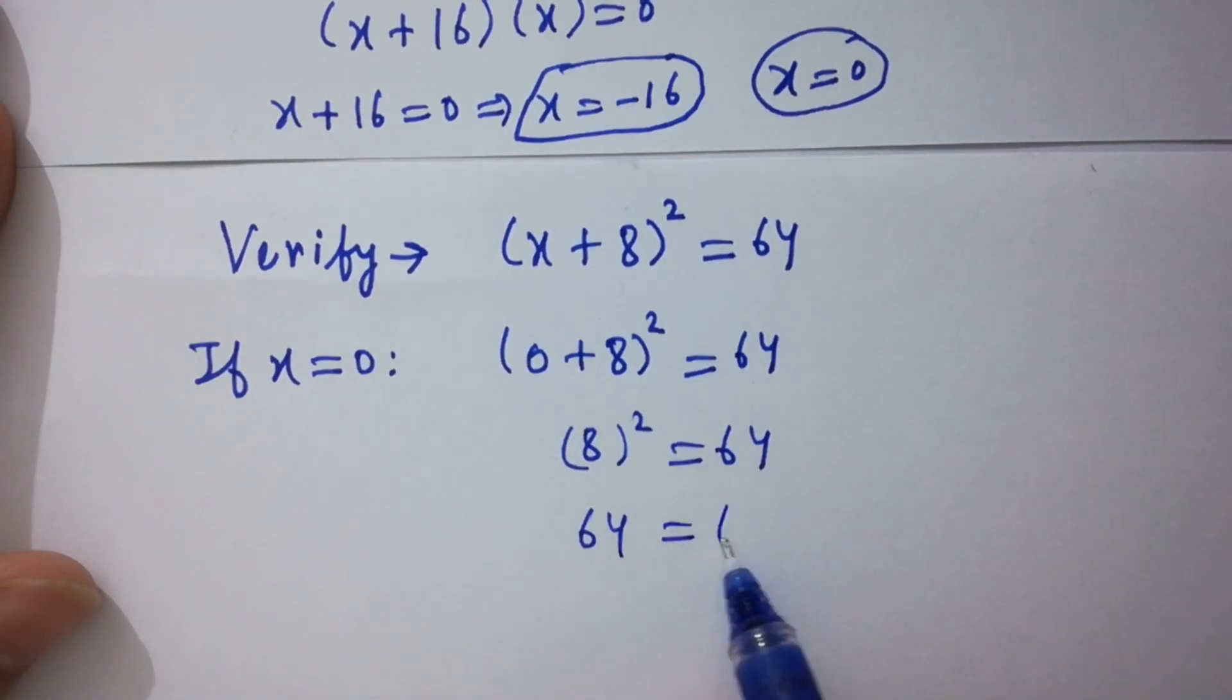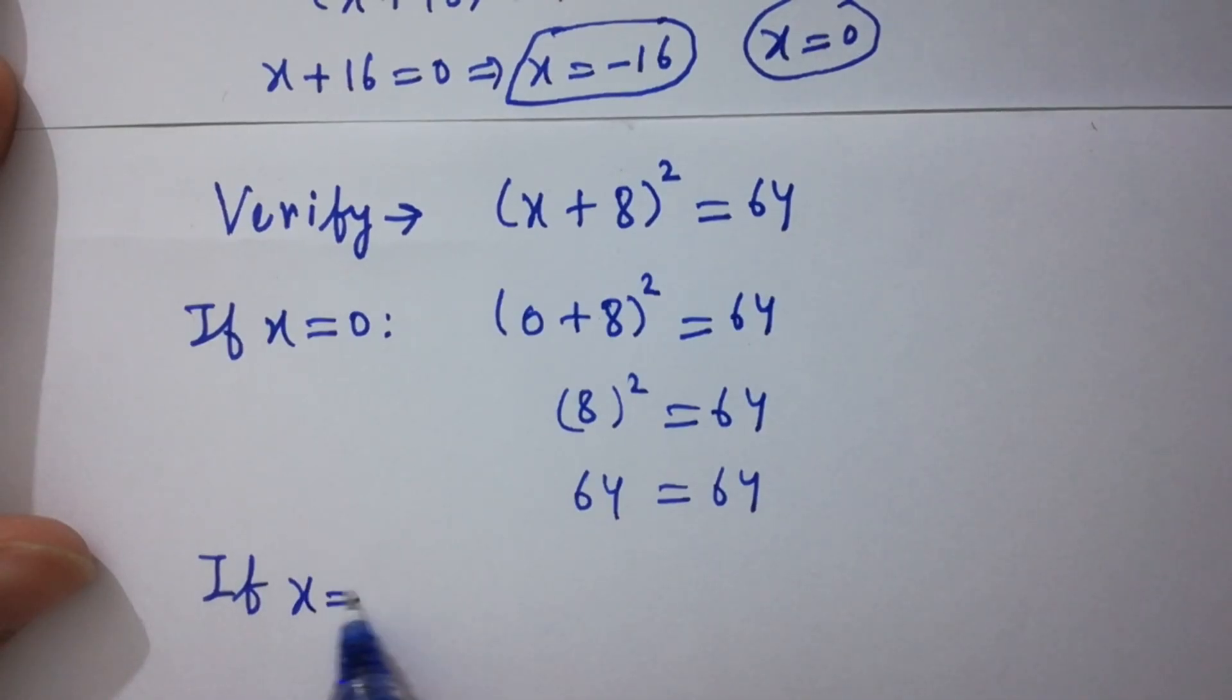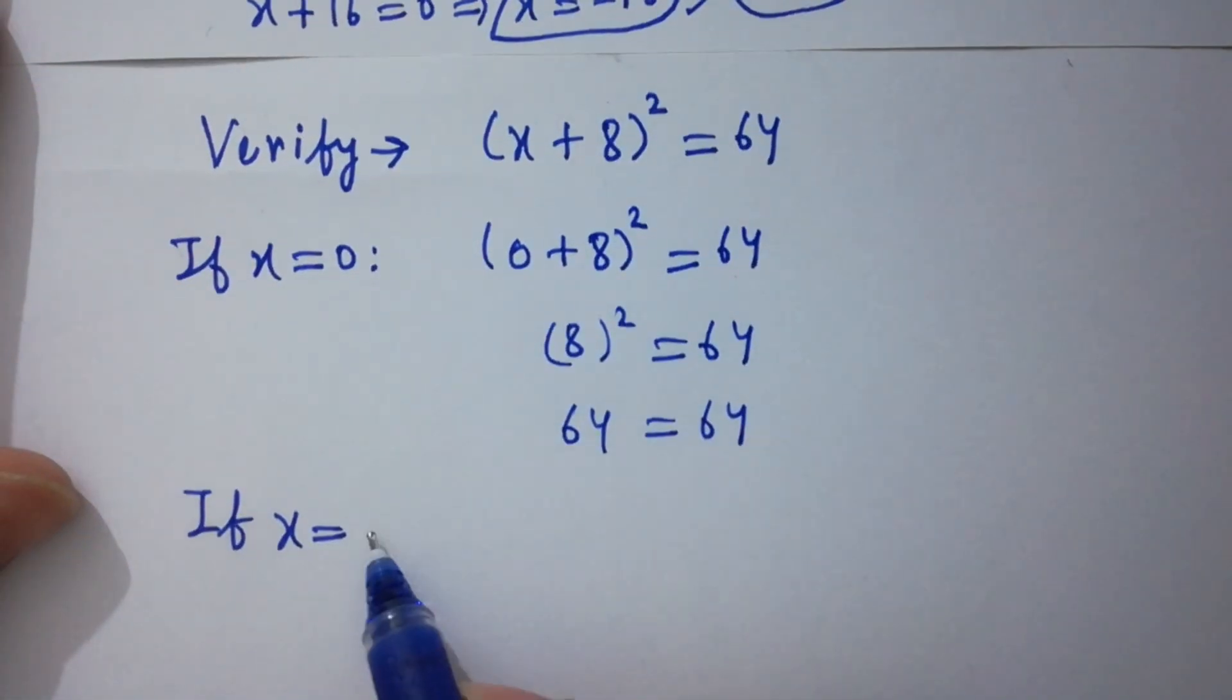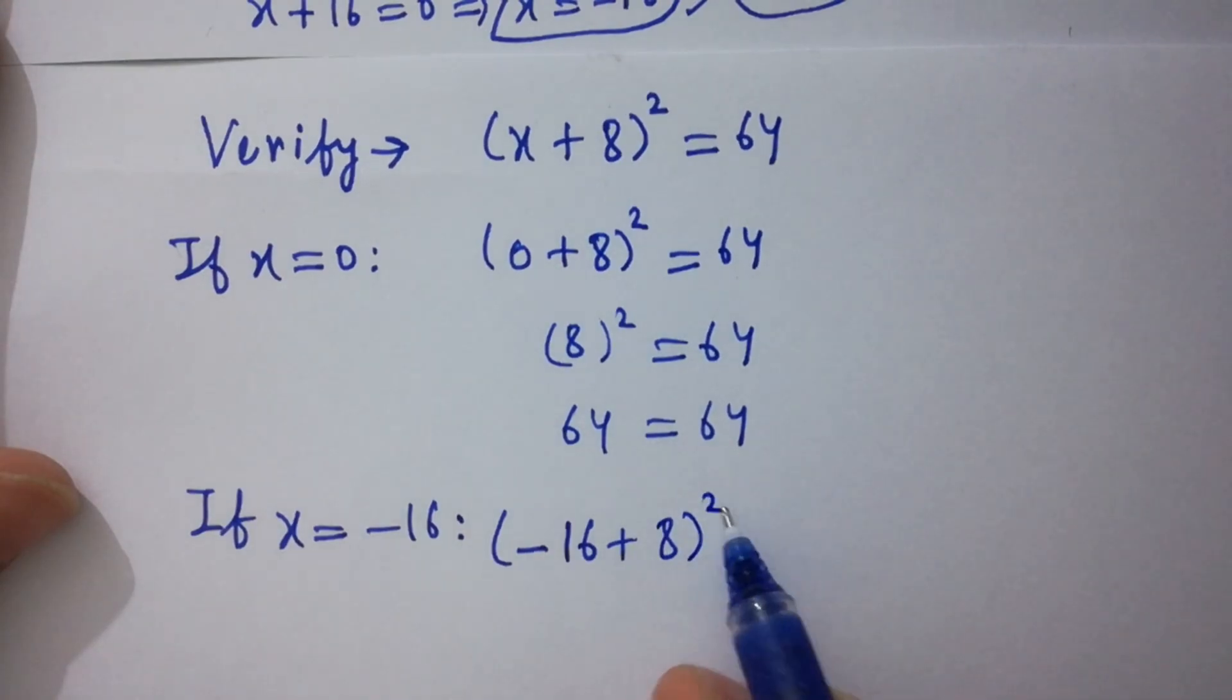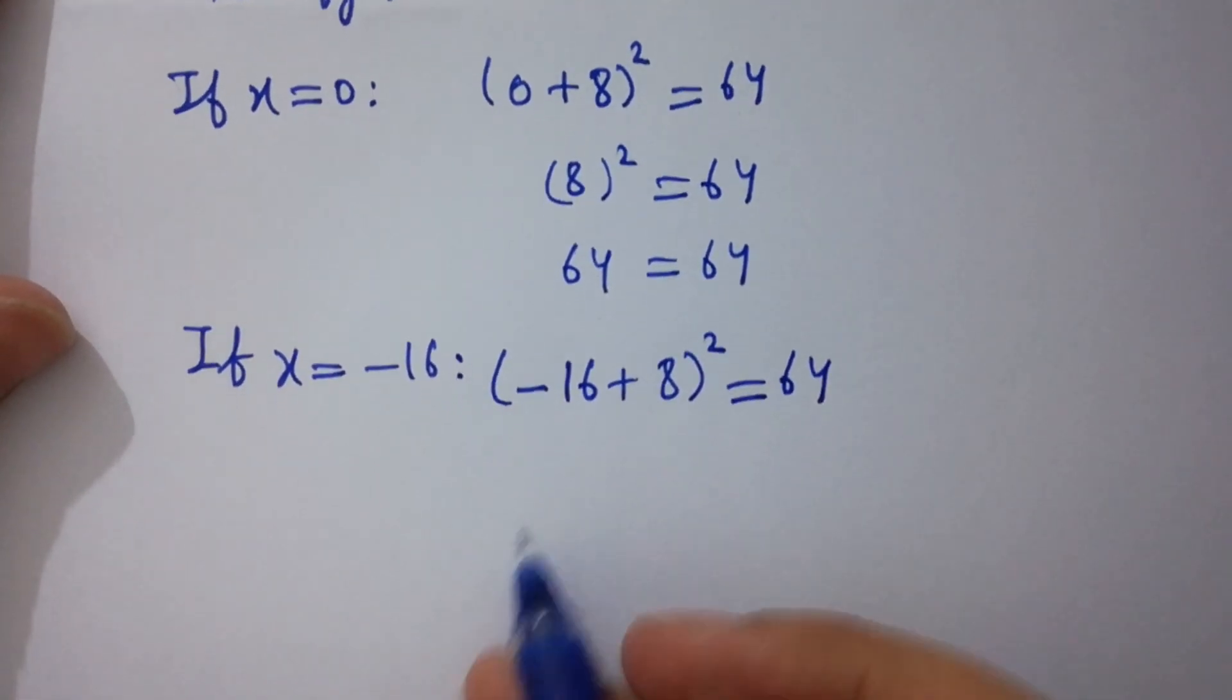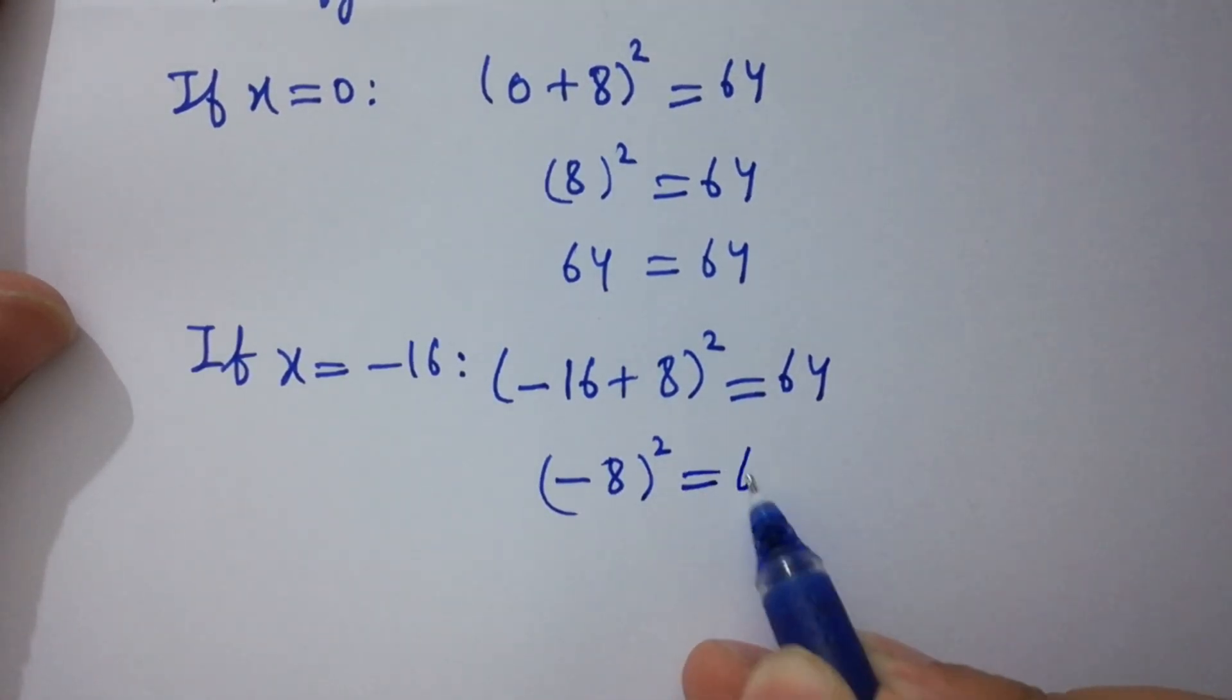And if x = -16, then (-16 + 8)² = 64. Simplify this: (-16 + 8) = -8, so (-8)² = 64.